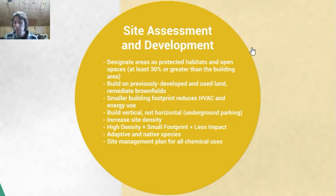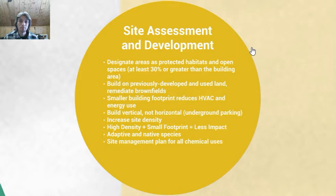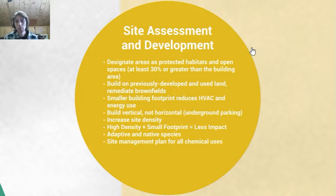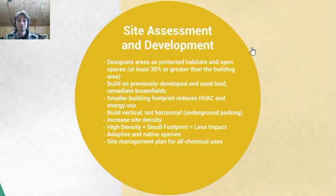There's also the concept of reducing the building footprint — the perimeter of the building where it meets the land, basically its outline on the ground. Reducing the building footprint in turn reduces materials, construction impacts, and energy use for HVAC systems. A key concept here is to build vertically, not horizontally. Building horizontally contributes to the building footprint, which you want to avoid. So build up rather than out, have underground parking, and increase site density. High density and a small footprint will have the least impact.